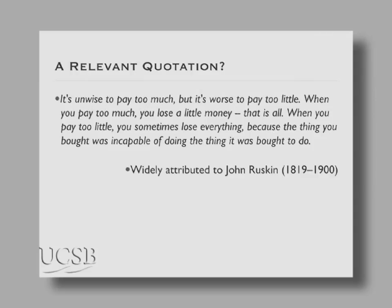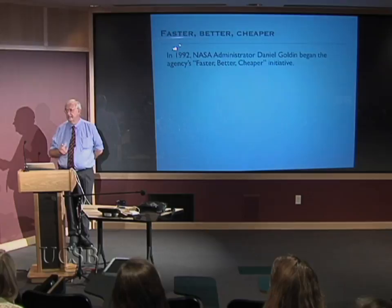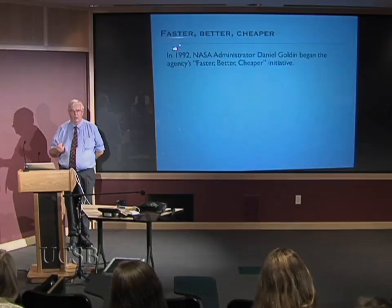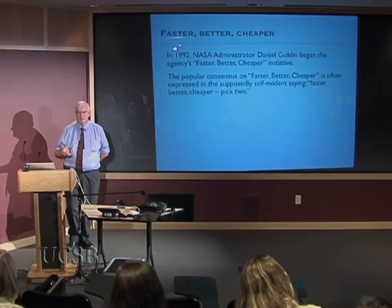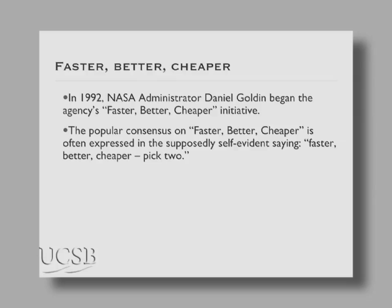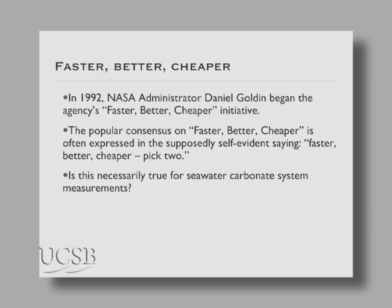Talking about CO2 measurements, I want to bring into your mind the ideas first made famous by Daniel Golden of NASA — the idea that you could engineer things to be at once faster, better, and cheaper. The popular consensus was that it was self-evident to just pick two of these: faster and cheaper, or better and cheaper.